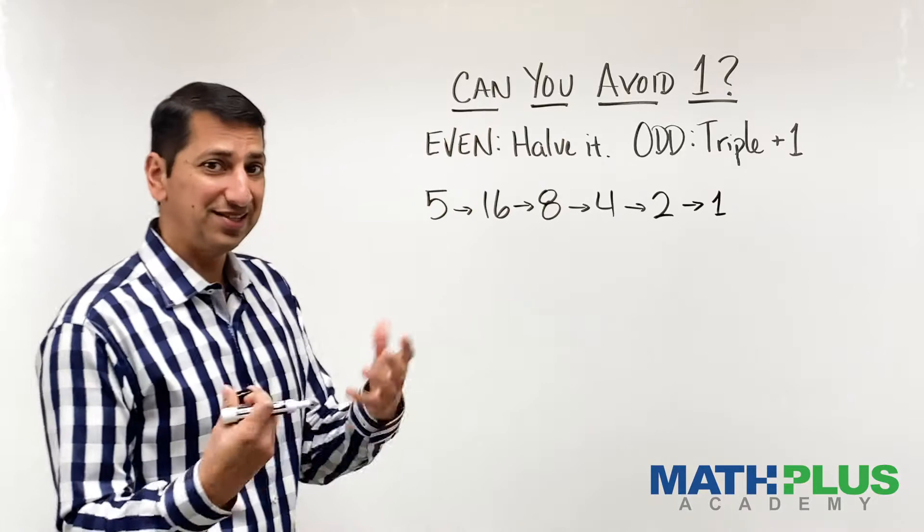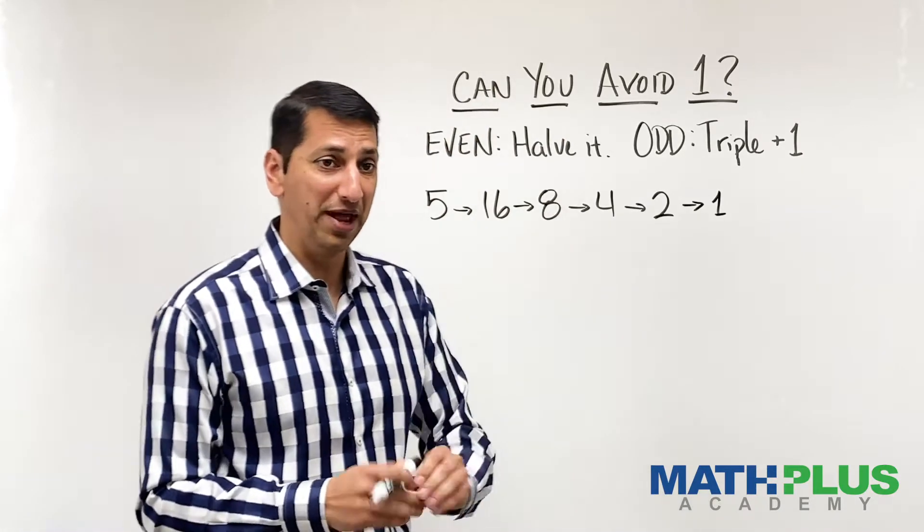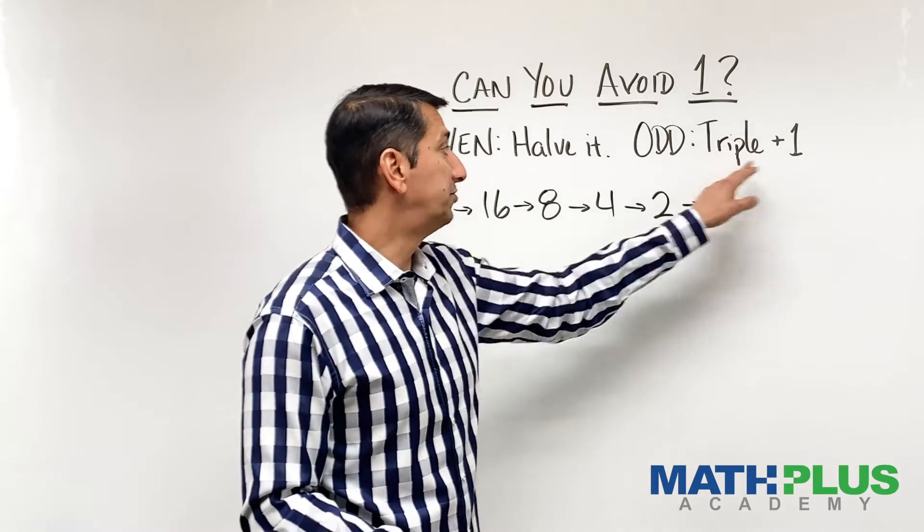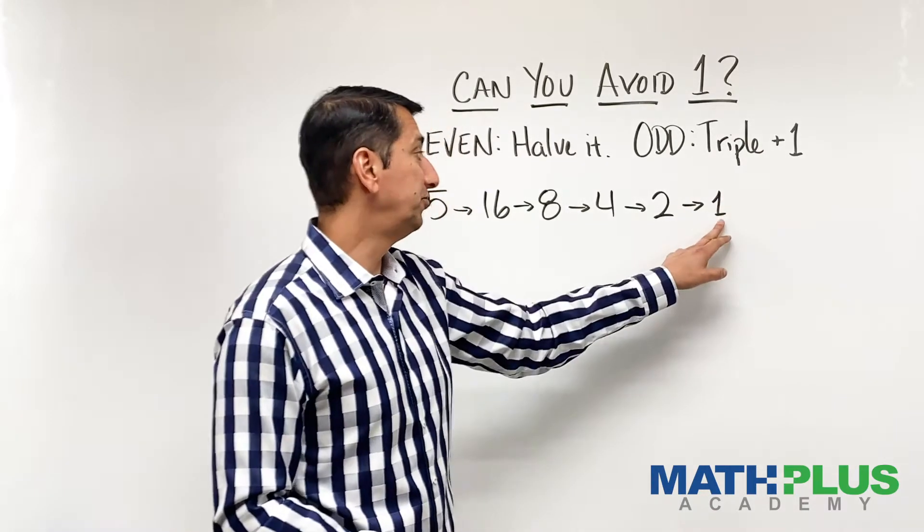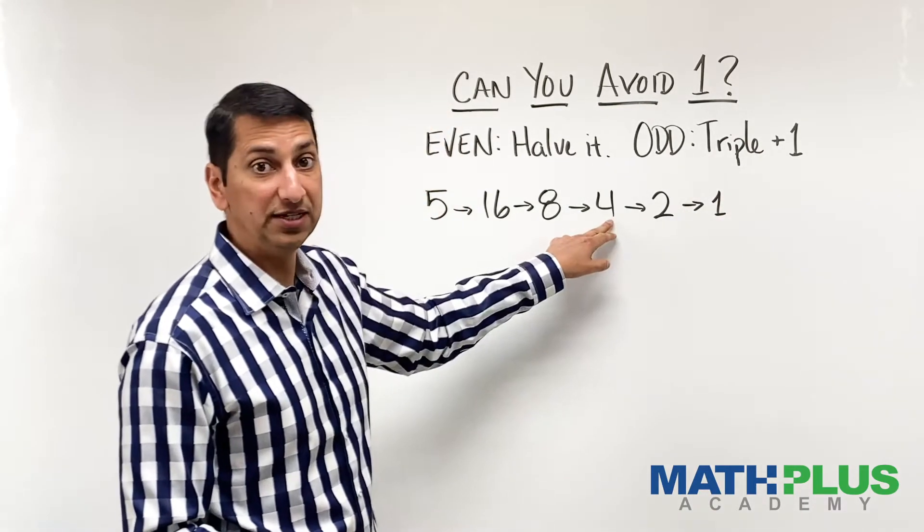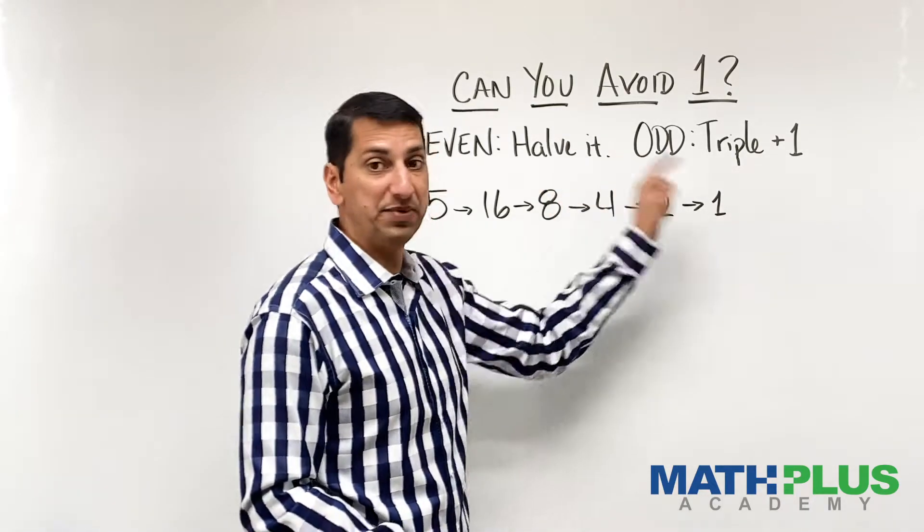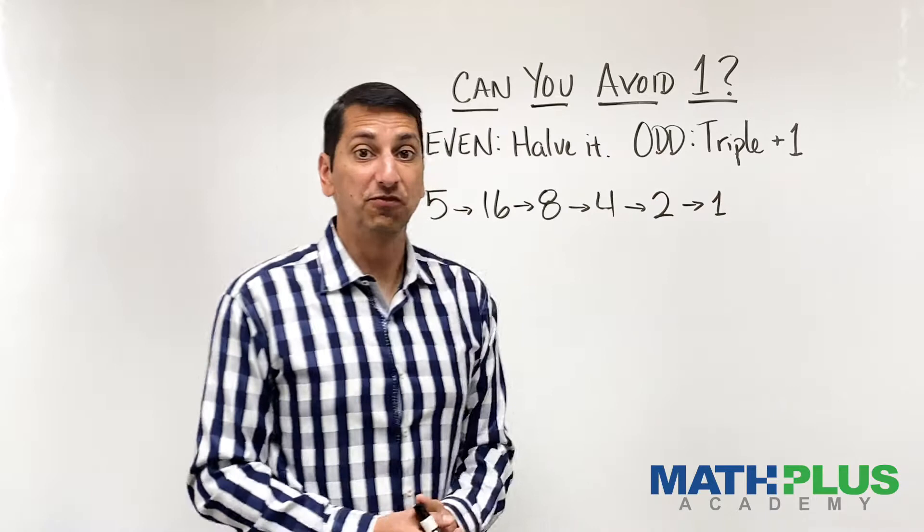Now, I'll pause here because it gets kind of boring at this point in a way. Because if I follow the rules, one, if you triple it and add one, gets you four, which just takes you back to here, which then gives you two and then one and back to four. So you kind of end up in this loop at the end, this four, two, one loop.